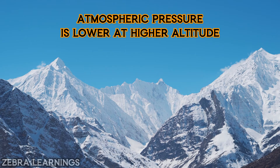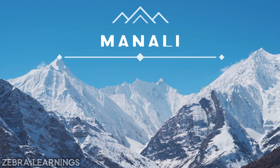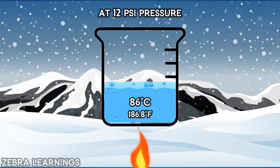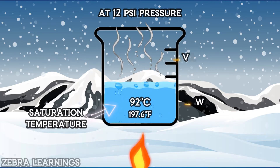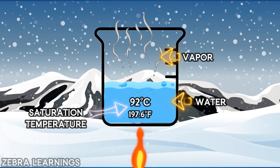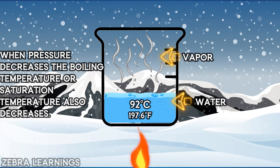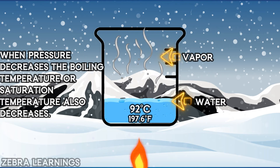At higher altitudes above sea level, atmospheric pressure is lower. The city of Manali in India is 2050 meters above sea level, where atmospheric pressure is lower than normal. When water is heated there, it starts boiling at 92 degrees Celsius. That means when pressure decreases, the boiling temperature — or saturation temperature — also decreases.